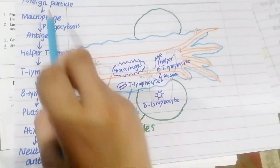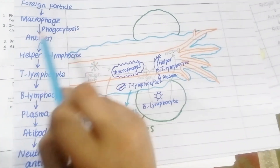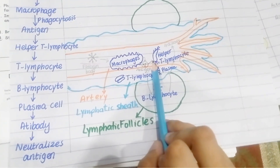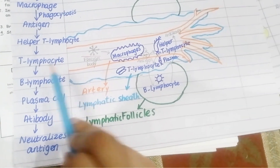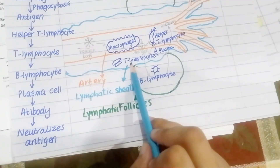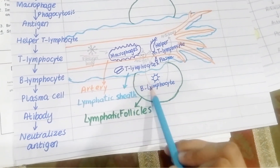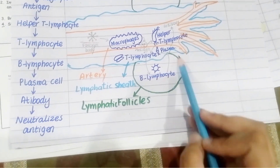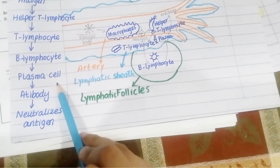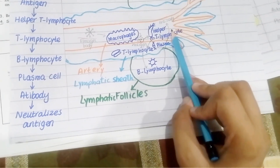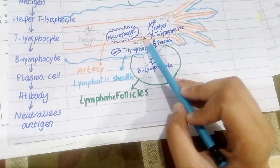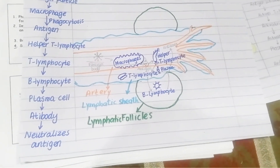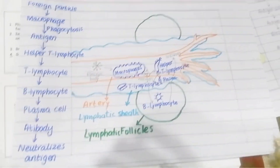This undigested waste particle acts as an antigen in the bloodstream. The antigen stimulates the helper T-lymphocytes, which then activate the T-lymphocytes present in the lymphatic sheath. The T-lymphocytes then activate the B-lymphocytes in the lymphatic follicles. The B-lymphocytes then activate plasma cells, and the plasma cells produce antibodies in the bloodstream. These antibodies break down the antigen and neutralize its harmful effects.